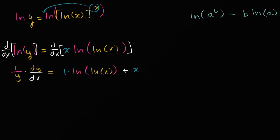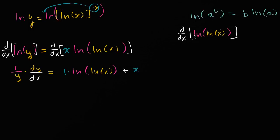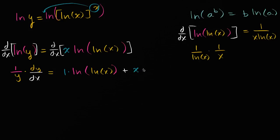Let's compute the derivative of the natural log of the natural log of x separately. Applying the chain rule: the derivative of the outer natural log with respect to the inner function is one over the natural log of x, then times the derivative of the inside function with respect to x, which is one over x. So this equals one over x times the natural log of x.